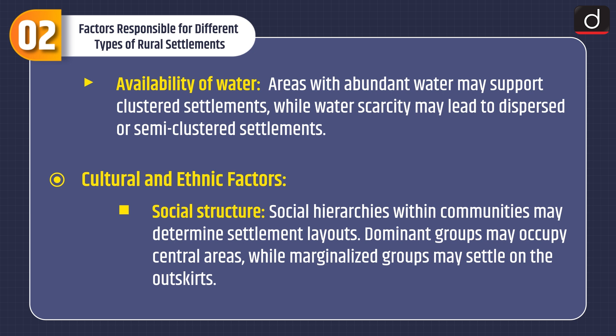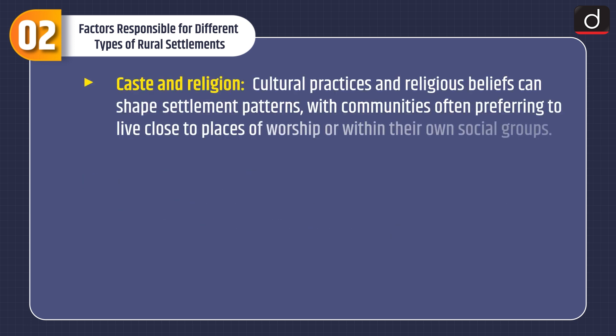Cultural and ethnic factors. Social structure — social hierarchies within communities may determine settlement layouts. Dominant groups may occupy central areas, while marginalized groups may settle on the outskirts. Caste and religion — cultural practices and religious beliefs can shape settlement patterns, with communities often preferring to live close to places of worship or within their own social groups.